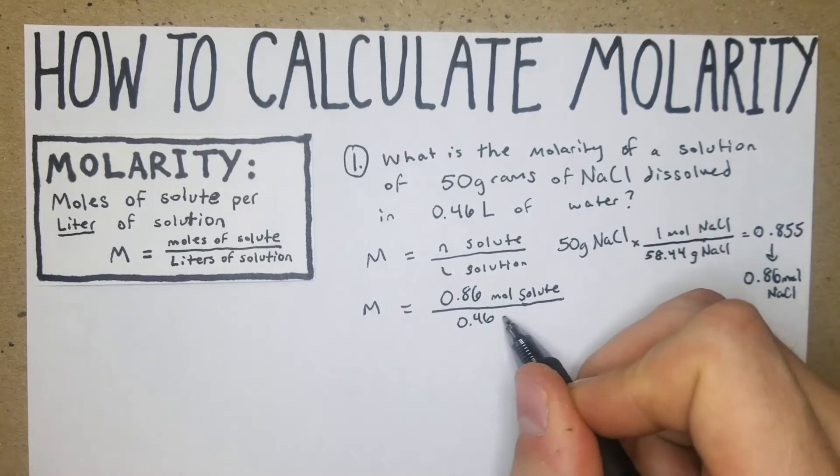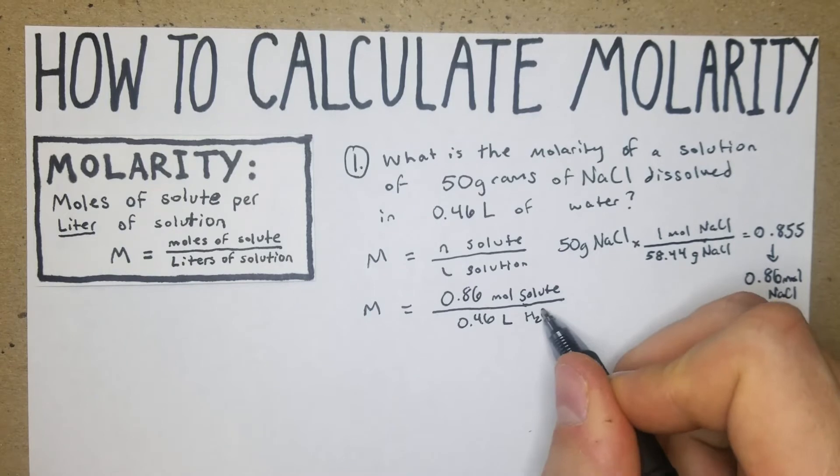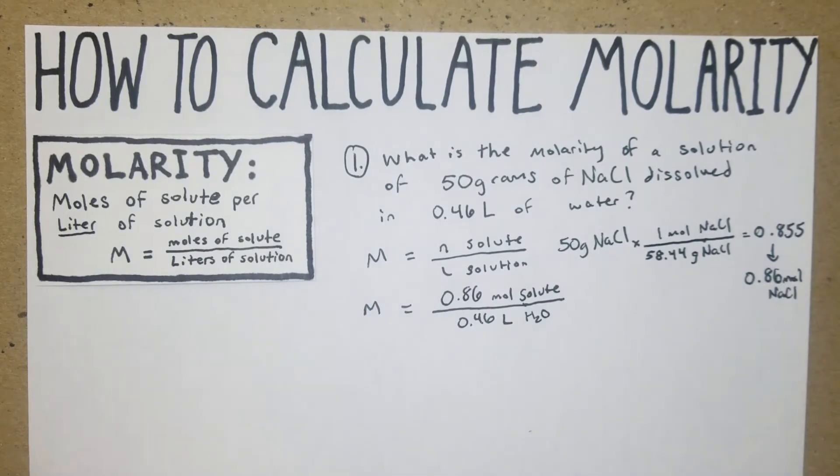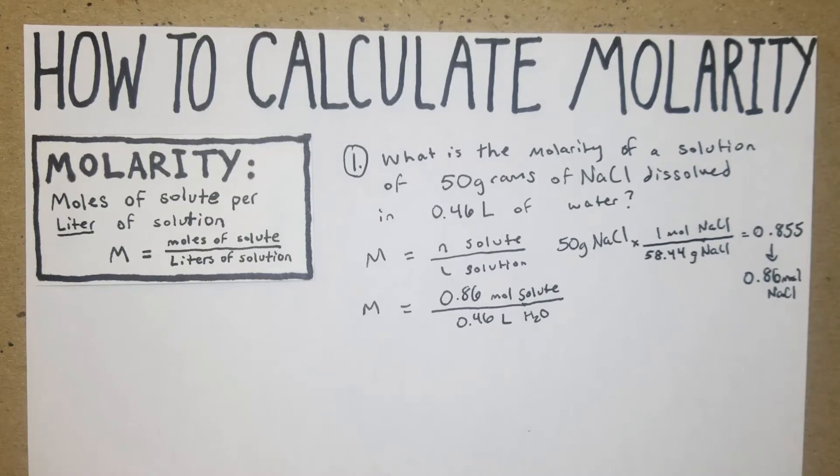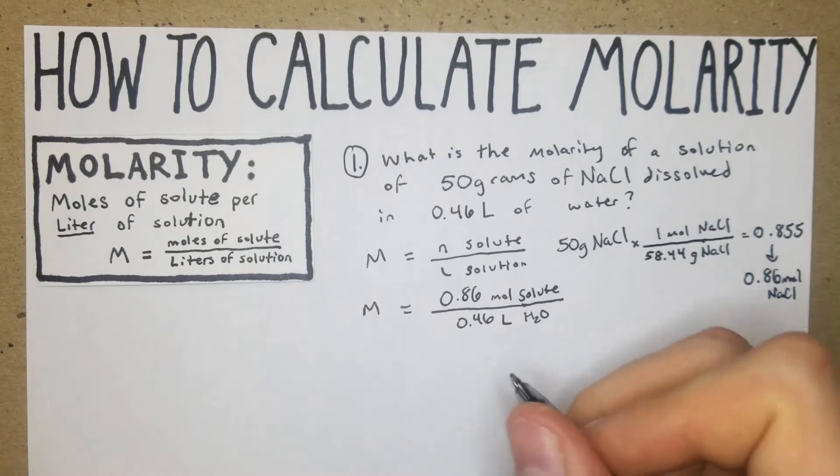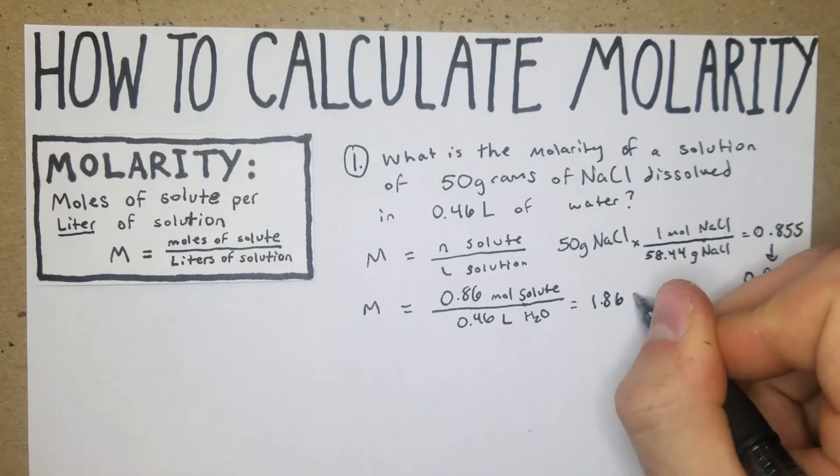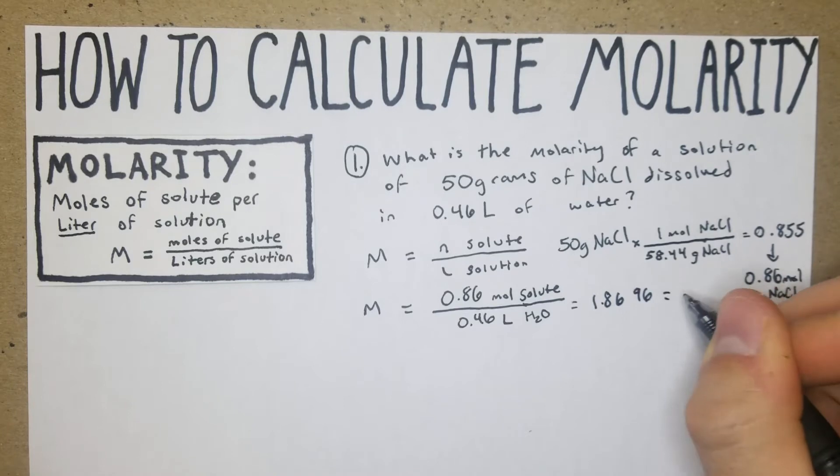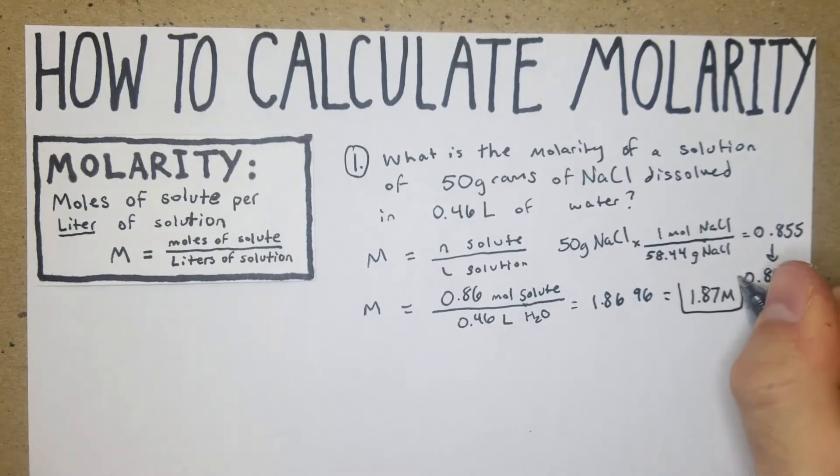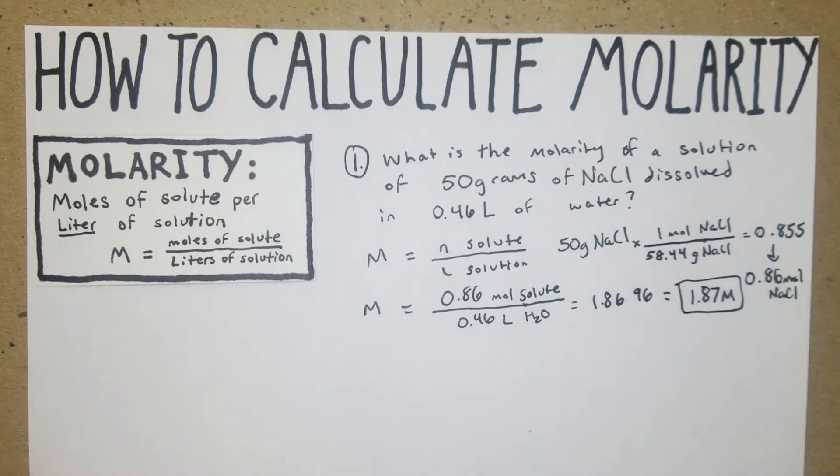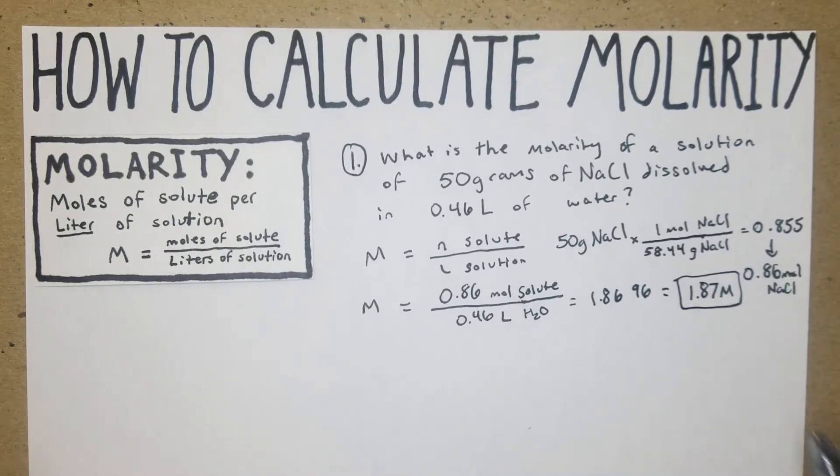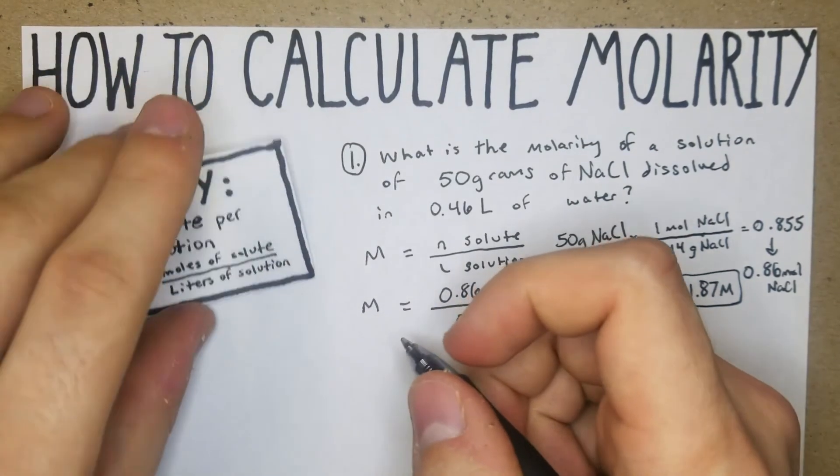We're just going to do that out: 0.86 divided by 0.46 equals 1.869. We can just round that to 1.87 M. So now we just solved for the molarity of what this solution would result in. Now we can just keep going.